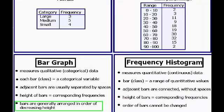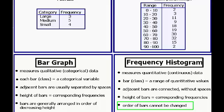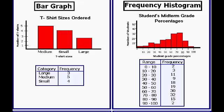And lastly, in the case of the bar graph, bars are generally arranged in order of decreasing heights by convention, whereas in the case of a frequency histogram, the order of the bars cannot be changed because they're continuous, and we can see this to be true when we compare the two graphs. In the case of the bar graph, you can easily rearrange medium versus small versus large without changing the meaning of the bar graph, but if you take a look at the frequency histogram, you can't rearrange 10 versus 90, for example. It wouldn't make any logical sense.